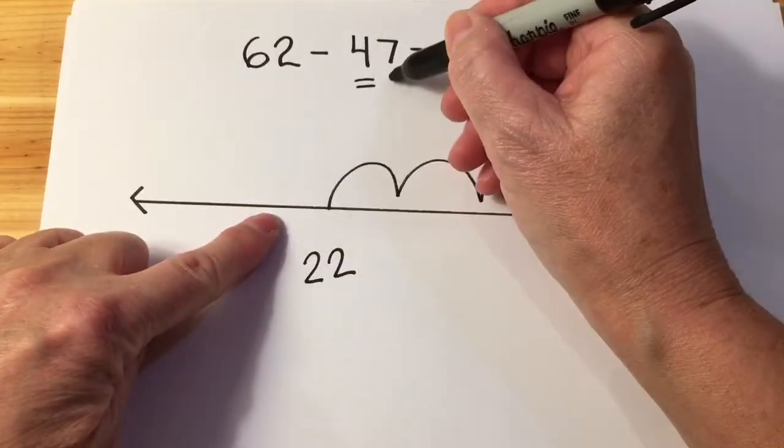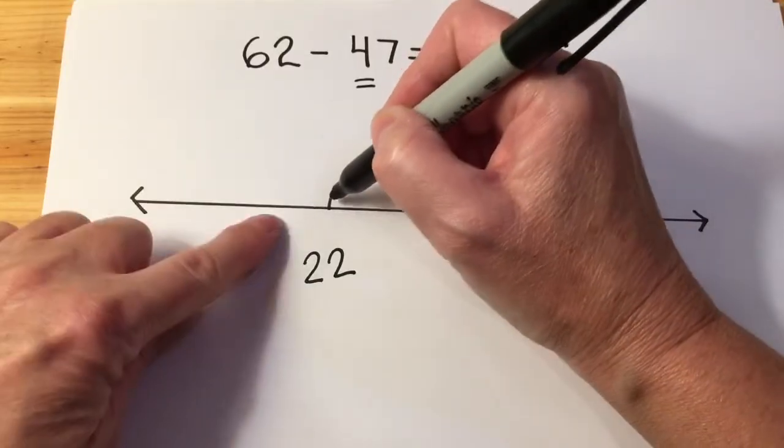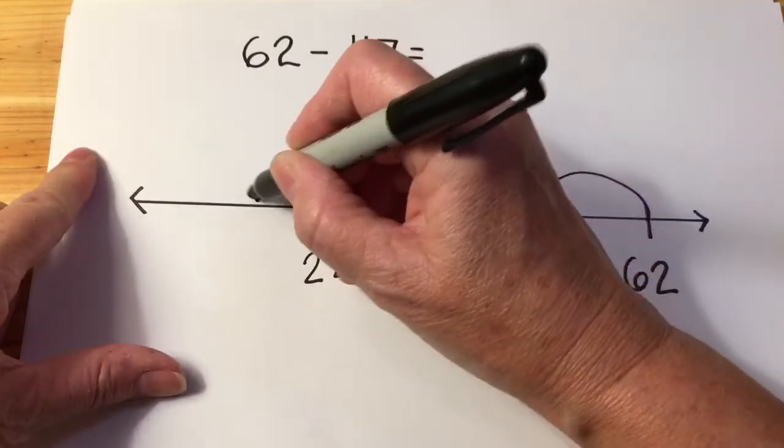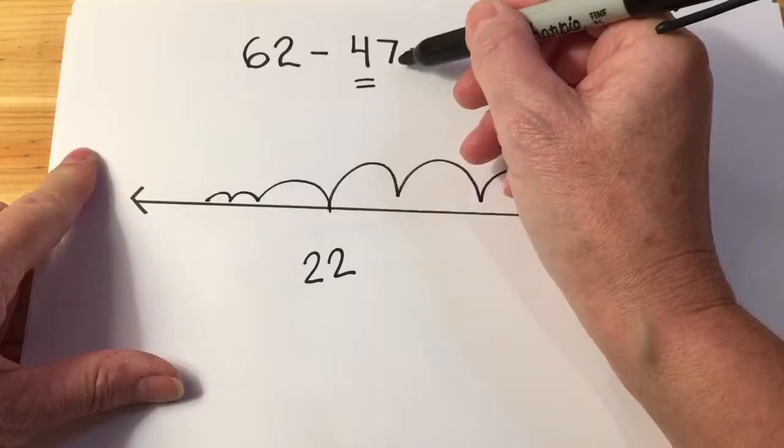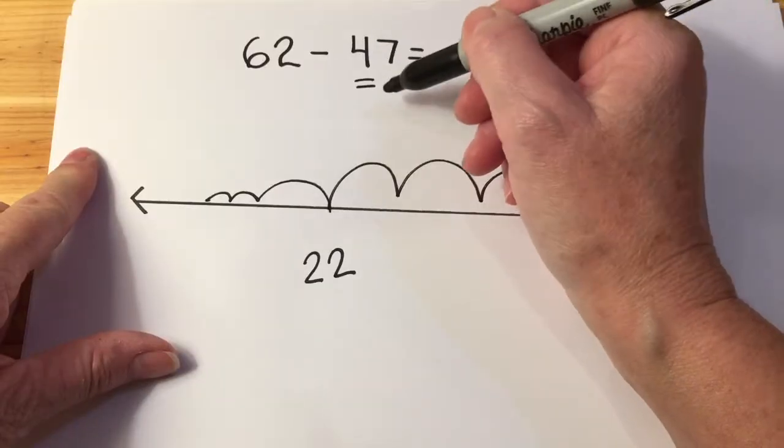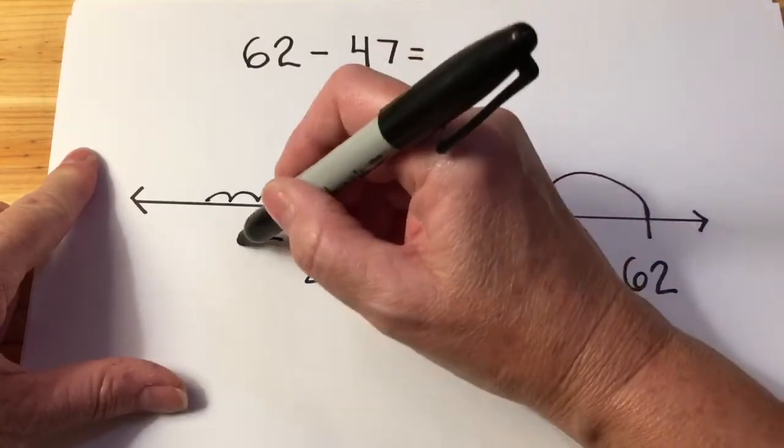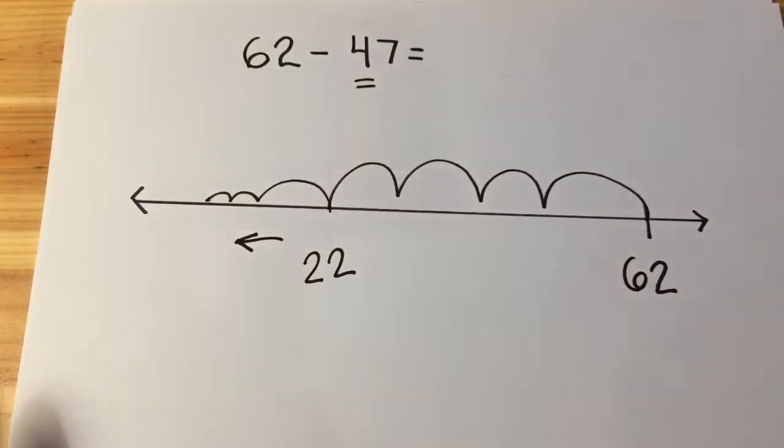Then I'm going to jump back again, and I could jump back a five and a two, or I could jump back the seven step-by-step and simply count backwards to achieve my goal.